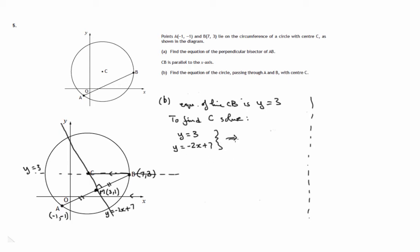So this implies that negative 2x plus 7 must equal 3. So negative 2x, subtract 7 from both sides, divide both sides by negative 2, you'll get positive 2. So the point C has x-coordinate 2 and we know it has y-coordinate 3. Let's add that to the diagram.